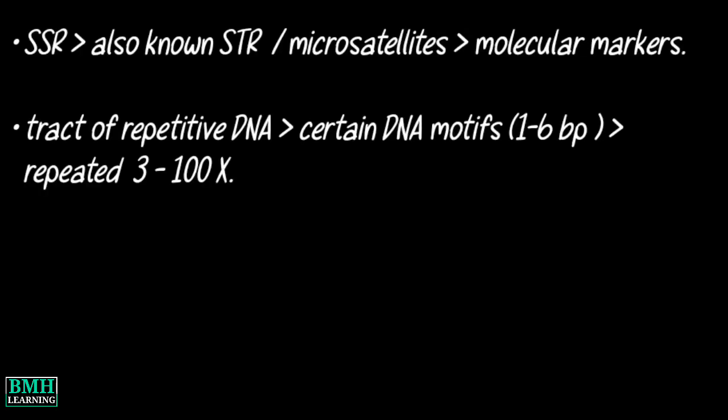Hello friends, welcome to BMH Learning. In this video we are going to discuss about SSR or Simple Sequence Repeat. SSR, also known as Short Tandem Repeats or Microsatellites, is one of the molecular markers. A microsatellite is a tract of repetitive DNA in which certain DNA motifs that can range from 1 to 6 or more base pairs are repeated, typically 3 to 100 times depending on the species.